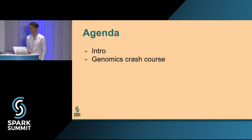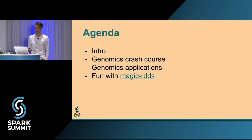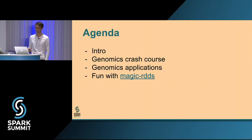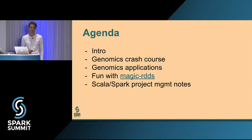I'll cover some details about genomics domain problems, then talk about tools we've written to solve them. I have one particular library I've spun out of the genomics work that includes interesting algorithms for collections — algorithms you might apply to regular collections but in a distributed context on RDDs. That repo is called Magic RDDs. I'll outline a few things in there that could be useful outside of the genomic space, plus some lessons from managing Scala Spark projects and tooling infrastructure.